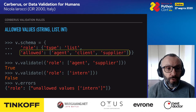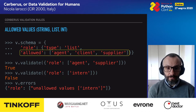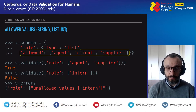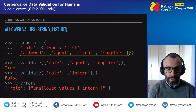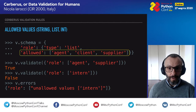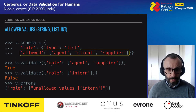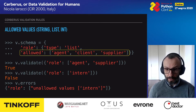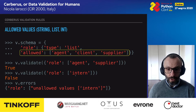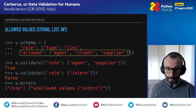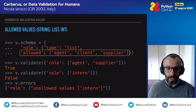Frequently you only want to allow certain valid values, which is done with the allowed rule. Here we have a role field of type list, and we only allow 'agent', 'client', and 'supplier' as values. The first document validates because all values are supported, but the second document is rejected because 'intern' is not allowed.